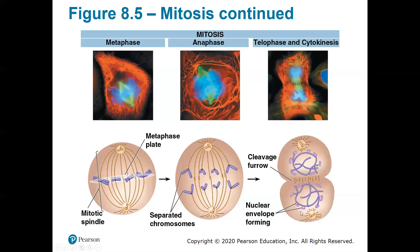That leads us to the last phase, which is telophase. Telophase goes hand in hand with cytokinesis, which I'll talk about in a minute. Telophase is the complete separation of the sister chromatids and the reformation of the nuclear envelope. You can see the nuclear envelope is starting to reform around the DNA, and the DNA is slowly starting to unwind and become not a chromosome but more into the chromatin form — the more stringy-like form. You now have two daughter cells that are identical to the parent cell.